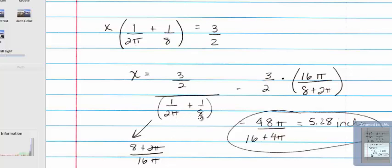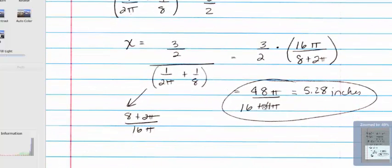What's the common denominator of 2 pi and 8? Well, that's going to be 16 pi. So you have 8 over 16 pi plus 2 pi over 16 pi, which turns out to be this. So now we have, since we have this compound fraction, you can simplify that by multiplying the top and the bottom by the reciprocal of the bottom. And so we get 3 halves times 16 pi divided by 8 plus 2 pi. And at this point, you get 48 pi over 16 plus 4 pi.